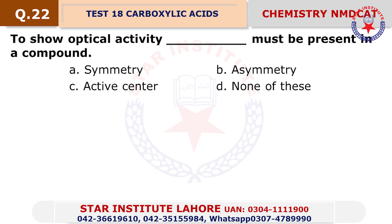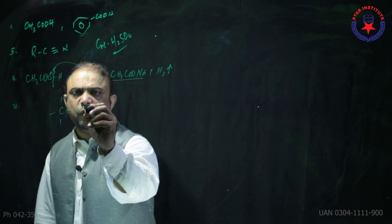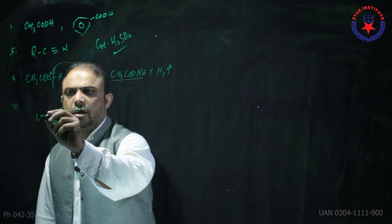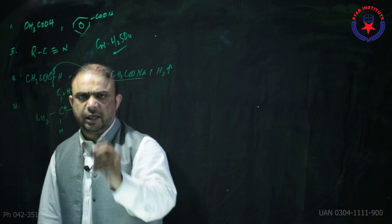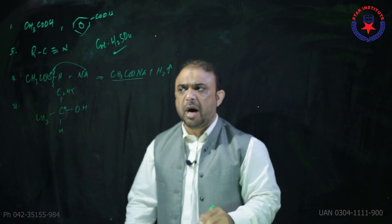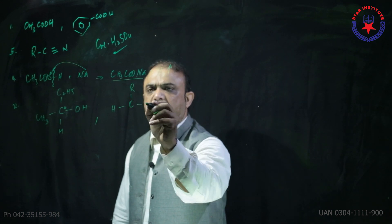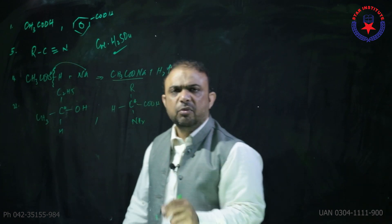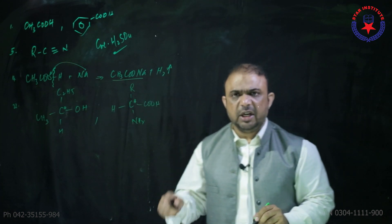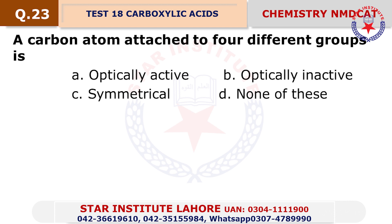Question number 22: An asymmetric carbon must be present — choice beta. An asymmetric carbon is a carbon atom directly connected to four different groups. It is also called a chiral carbon or optically active carbon. Take the example of an amino acid: one side has the R group, one has the COOH group, one has NH₂, and one has H — all alpha-amino acids are optically active except glycine, which has hydrogen.